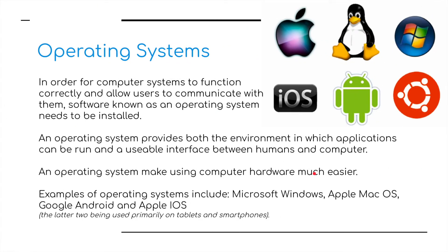So what is an operating system? Well, in order for computers to function correctly and allow users to communicate with them, software known as an operating system needs to be installed. An operating system provides both the environment in which applications can be run and a usable interface between humans and the computer. It makes using computer hardware much easier. Examples of operating systems include Microsoft Windows, Apple Mac OS, Google Android and Apple iOS — the latter two used primarily on tablets and smartphones.